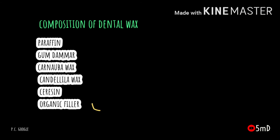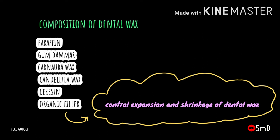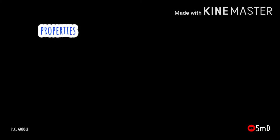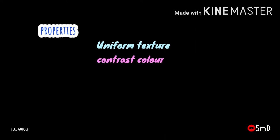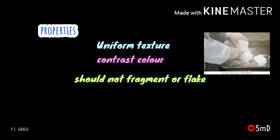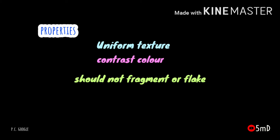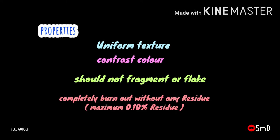Organic fillers when added can control shrinkage and expansion of dental waxes. Regarding properties, the wax should be of uniform texture — no hot spots or granules should be seen on the surface. When carving and finishing the wax pattern, the color should contrast with the die material to facilitate carving and finishing the margins. The wax should not fragment or flake; flaking is a property of paraffin, so modifiers are added to change this property.